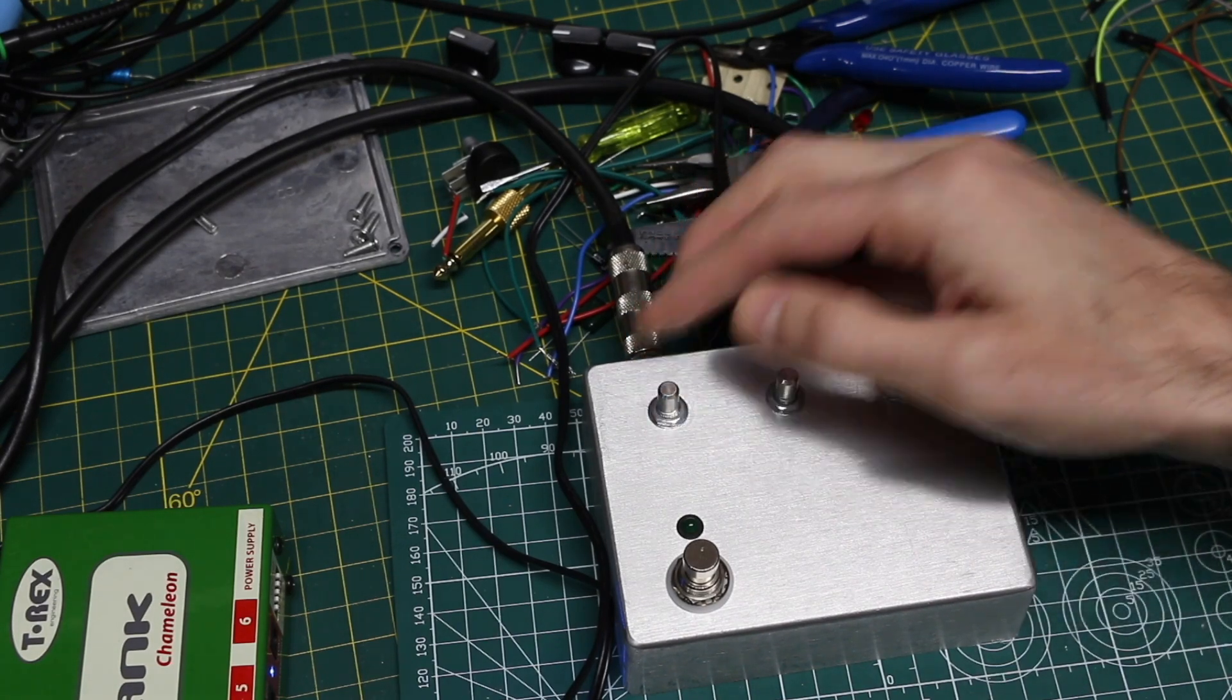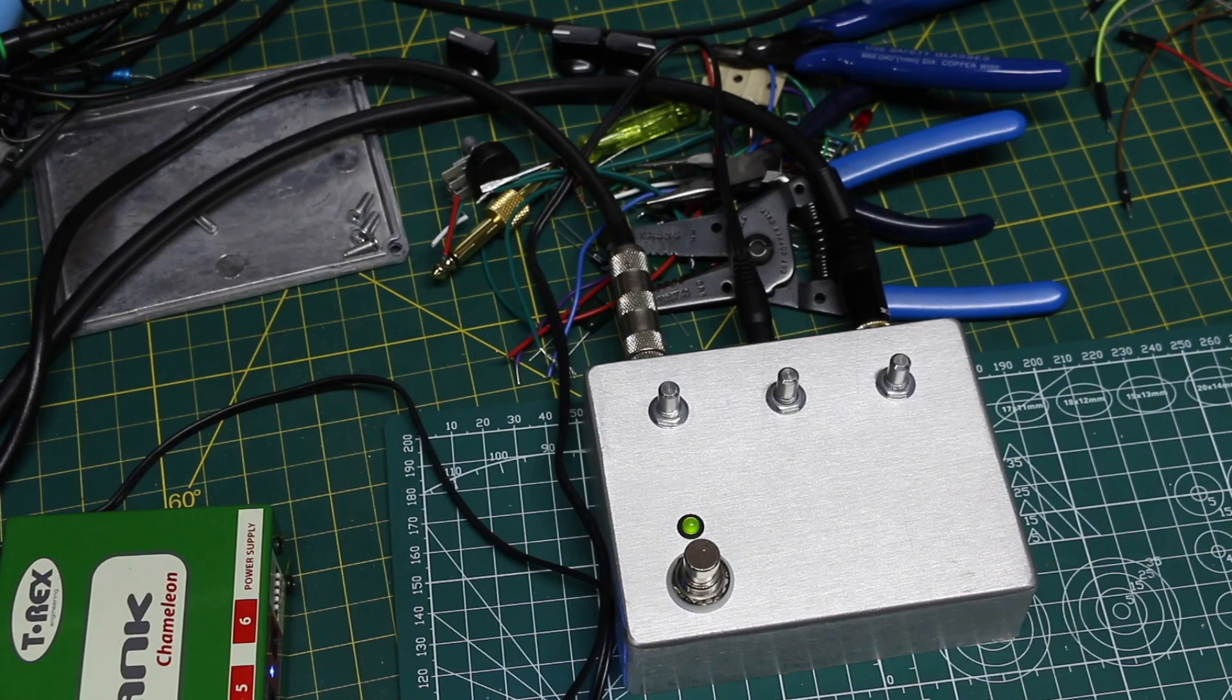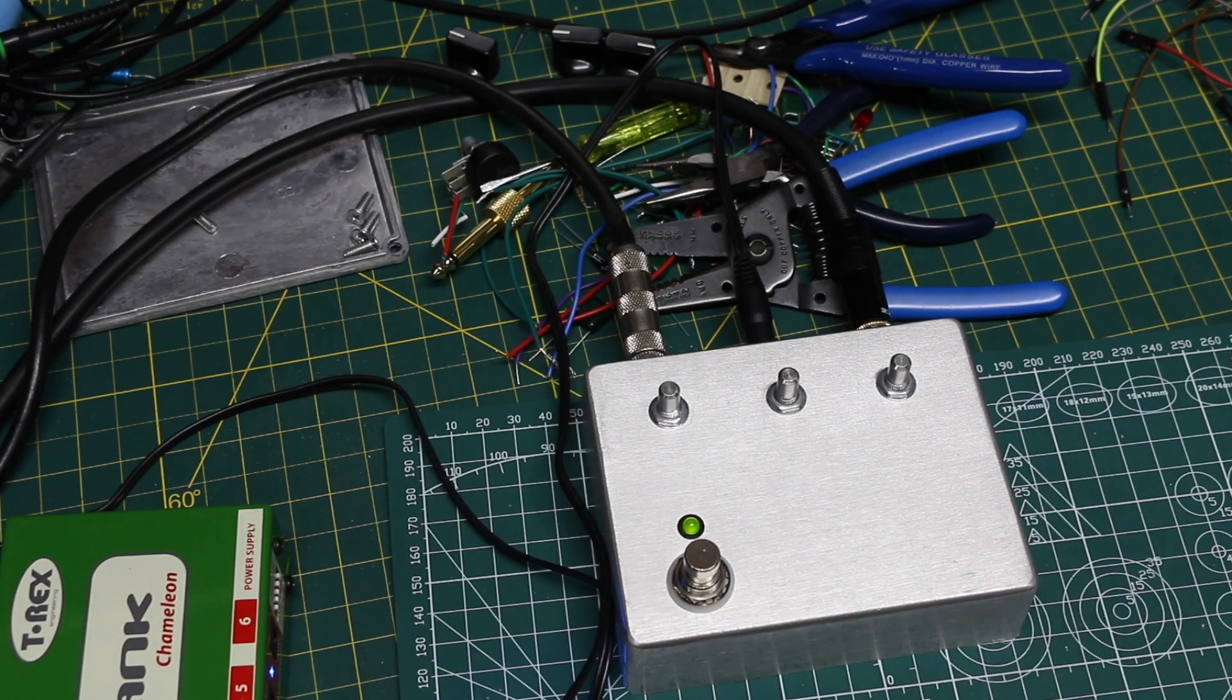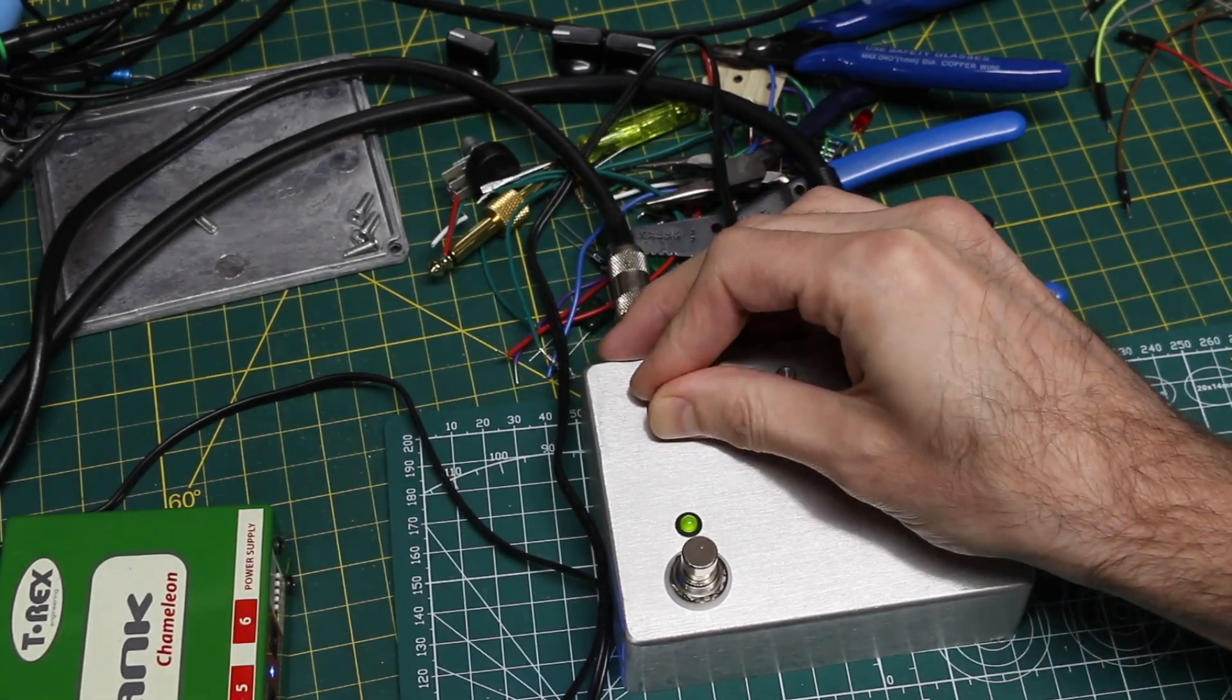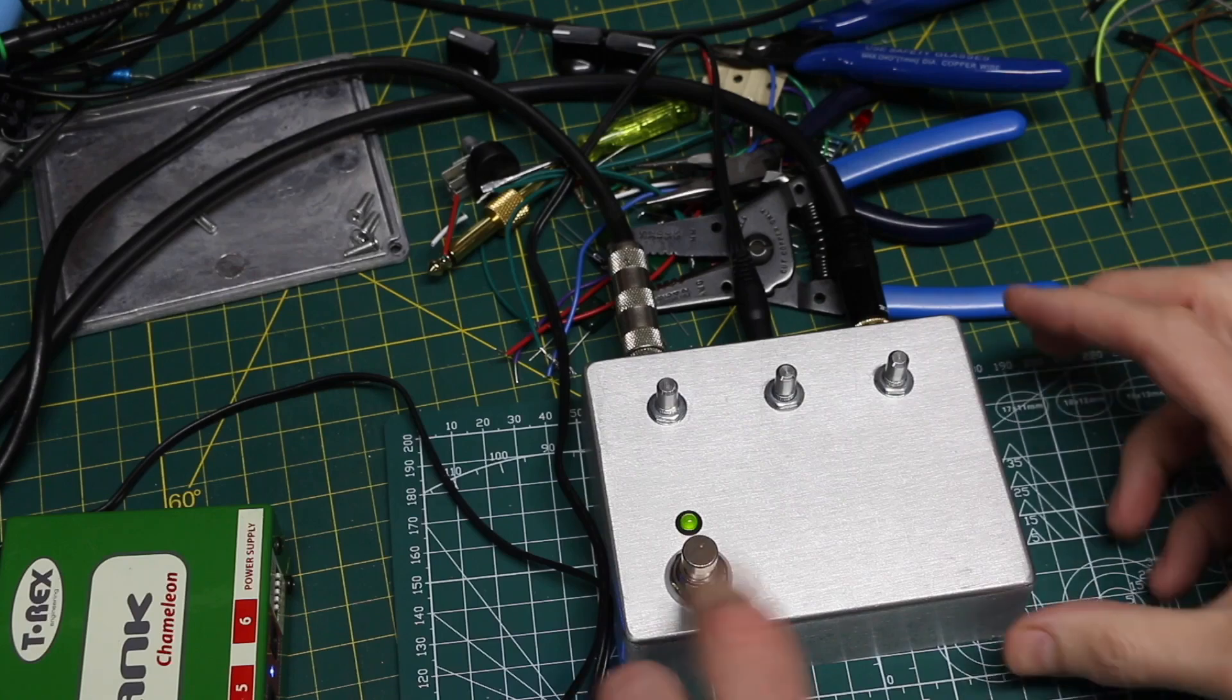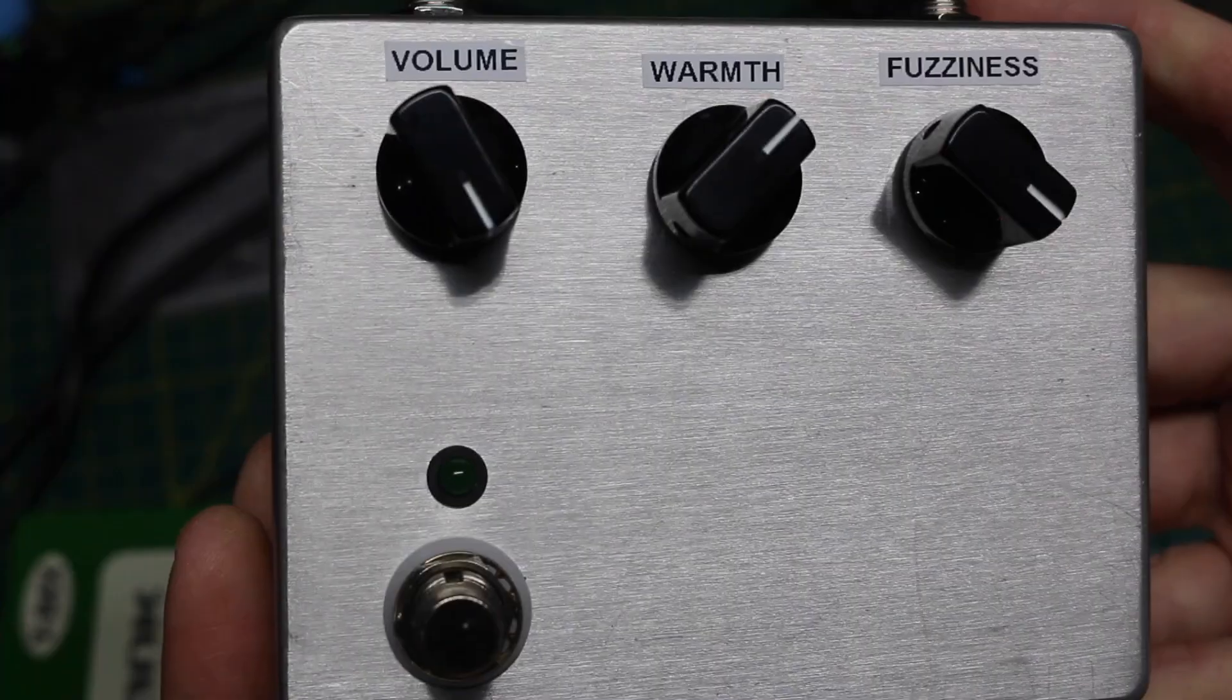And I'll set volume on max, tone somewhere in the middle, and fuzz almost all the way up. And turn it on. It seems to work. So I'll turn it off. Now I need to put the back cover on and some knobs on here and some labels to finish it off.